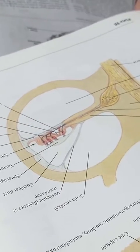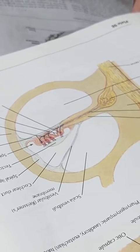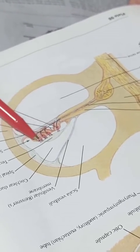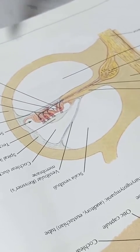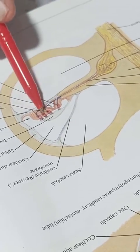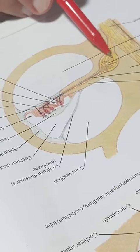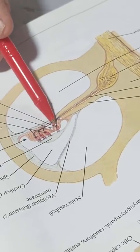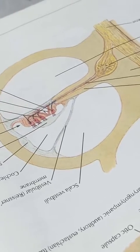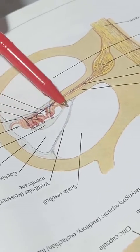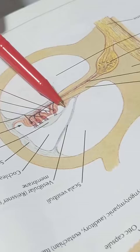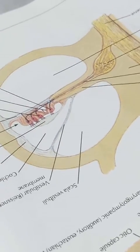The spiral organ of Corti lies on the basilar membrane and consists of sensory hair cells, which are the sensory receptors for hearing. These sensory hair cells are supplied by branches from the spiral ganglion — the dendrites reach to the sensory hair cells — and from above they are overlaid by the tectorial membrane, also called membrana tectoria.